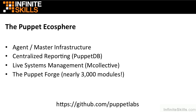Puppet also provides a tool for live systems management called MCollective, or the Marionette Collective. MCollective allows you to control the actions and interactions of tens to hundreds to thousands of Puppet agents across an entire infrastructure. Using MCollective, you can have a live, real-time view into what services and software are running on your system, and even push changes such as package updates or software deployments to each individual node — all at once, one at a time, or in groups. MCollective gives you real-time command and control over your entire infrastructure.